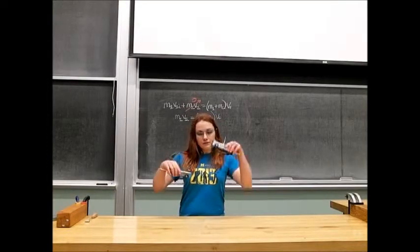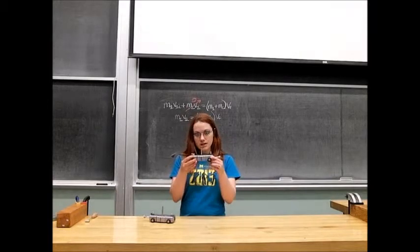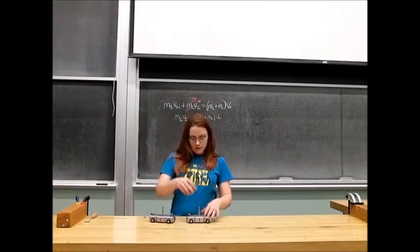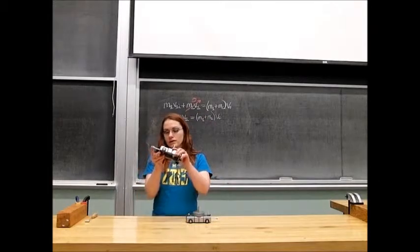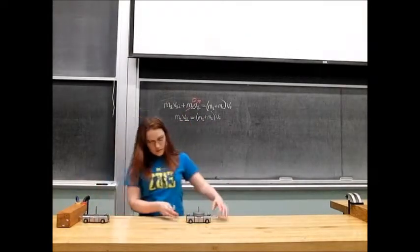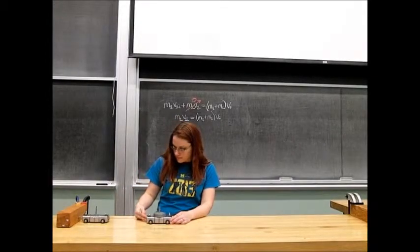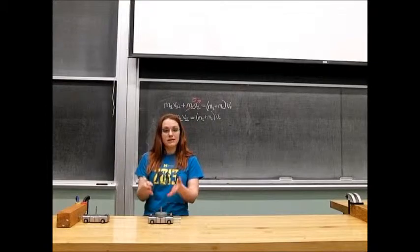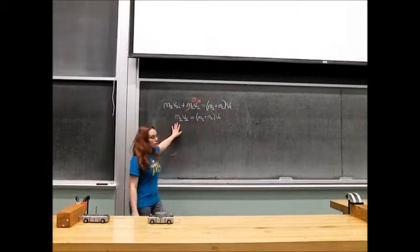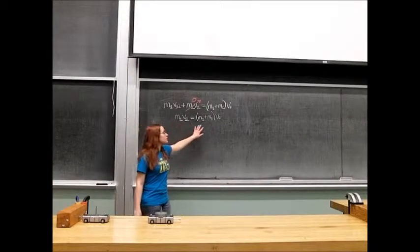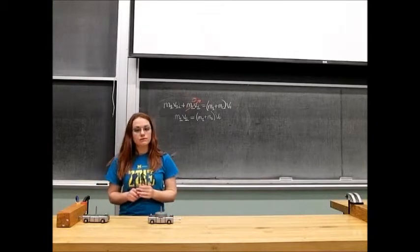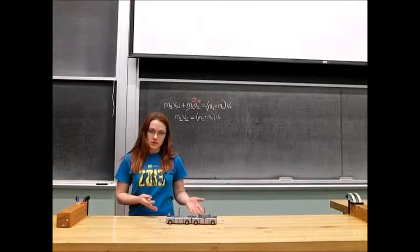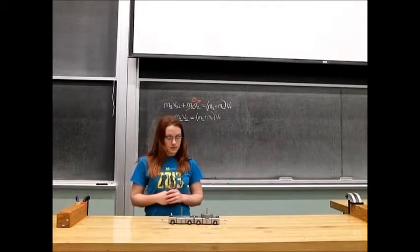Let's see what happens when we differ the masses of our two carts. We are going to take our stationary cart and make it heavier — three M, just like before — and give our first cart a set velocity. We should observe a velocity that is even slower than the previous one, since there is more total mass at the end than what we started with. In three, two, one. And as you can see, it went much slower than the previous collision.